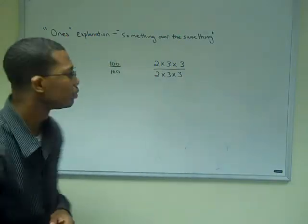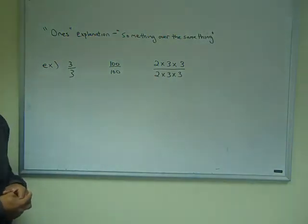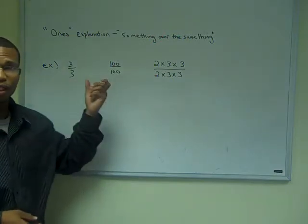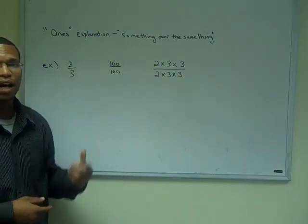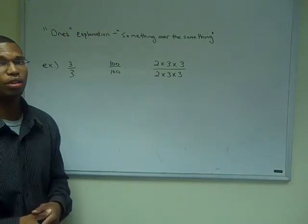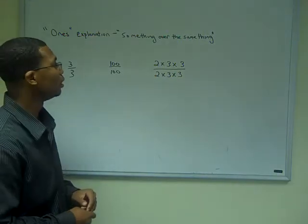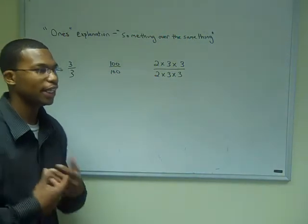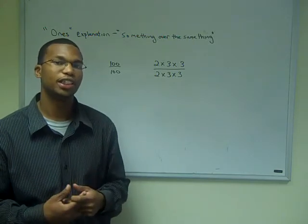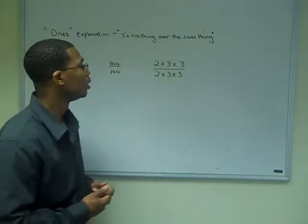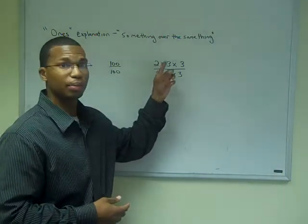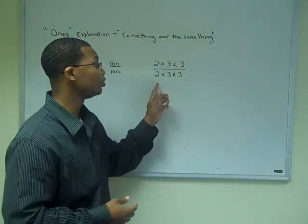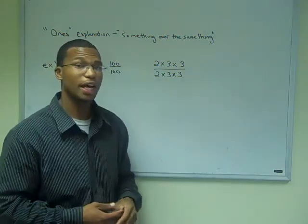Let's look at some examples. If I had the fraction 3 over 3, this tells us that I have 3 slices out of 3 pieces in total, which means I have the whole thing. The same as with 100 over 100. Taking it a step further with prime factorization examples: if I take 2 times 3 times 3, and put that same number over 2 times 3 times 3, then I have a form of 1.